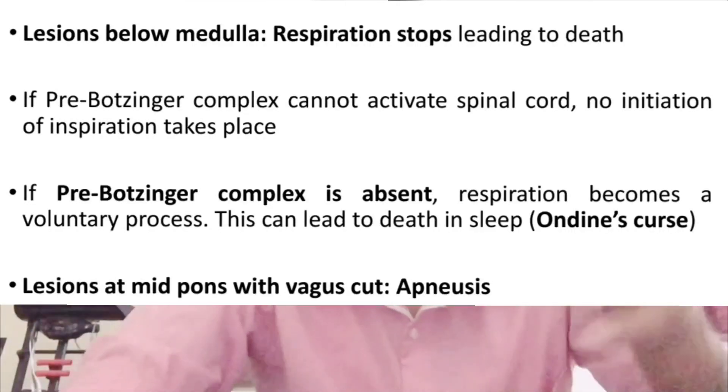This condition is illustrated by Ondine's curse — a mythological story in which a nymph curses a man to remain awake to control his own breathing. Clinically, it represents loss of involuntary automatic breathing control while voluntary control remains. Without the ability to sleep and maintain breathing, death can result. Treatment involves mechanical ventilation.